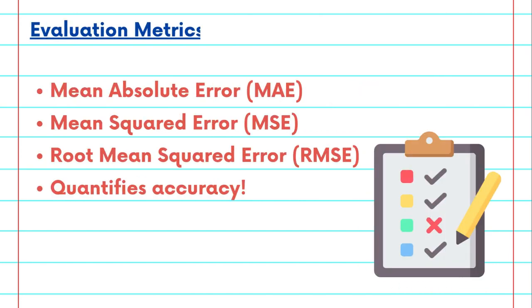Key evaluation metrics for time series models include mean absolute error (MAE), mean square error (MSE), and root mean square error (RMSE). These metrics quantify the accuracy of your forecast.